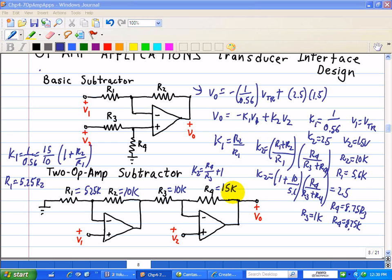Now however, the 2 op amp subtractor has both inputs applied directly to non-inverting op amp inputs. Now why is this important? Well these inputs have very high input resistances. Now that means that the second design does not load the transducer or drain energy from the 1.5 volt battery.